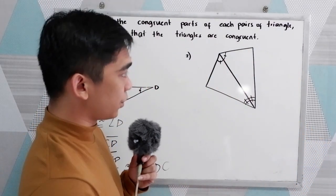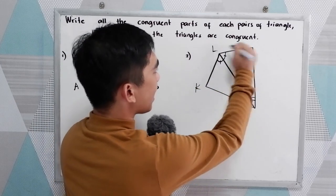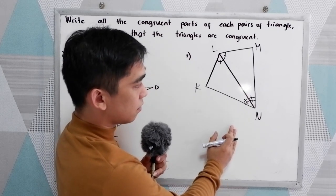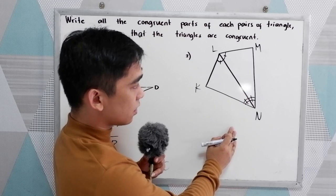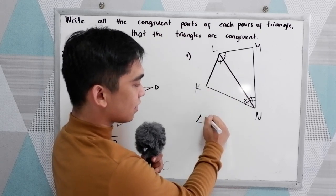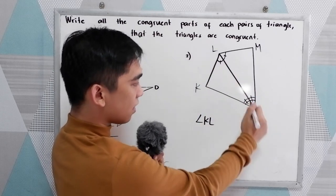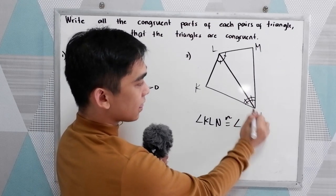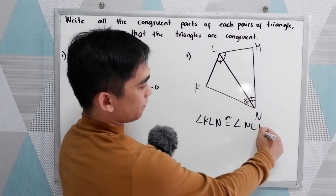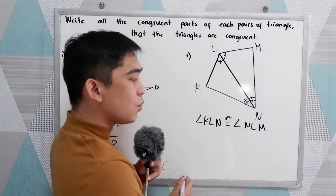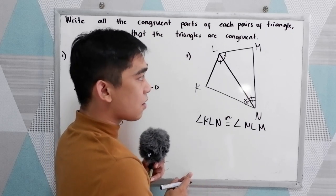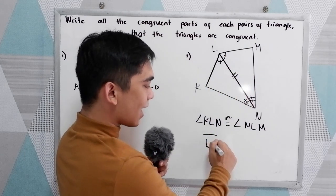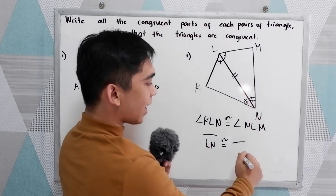Now, number 2. I will name the vertices K, L, M, N. Study our illustration and our markings. We know that angle KLN is congruent to angle NLM. Now we need an included side. By the reflexive property of congruence, we know that side LN is congruent to side LN.